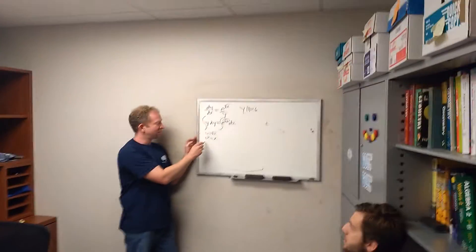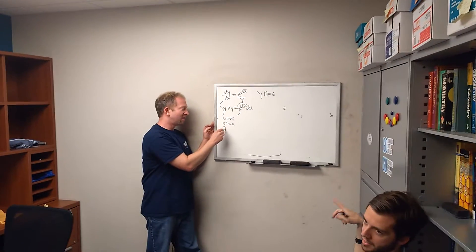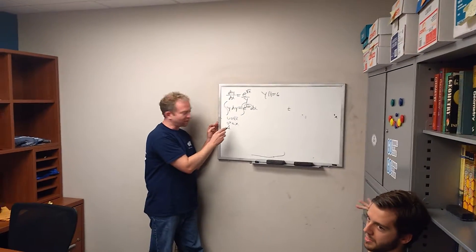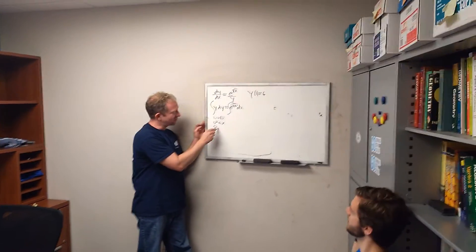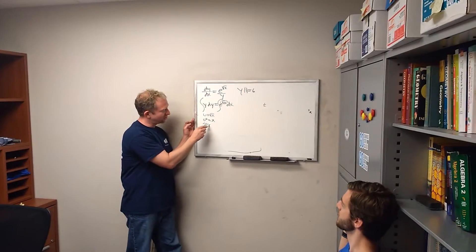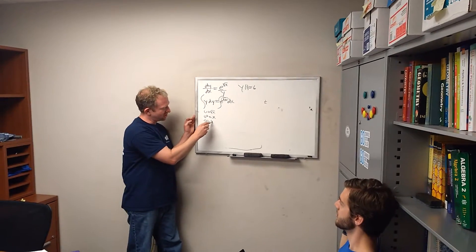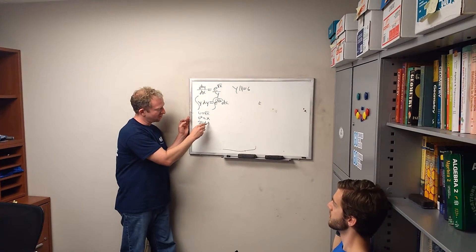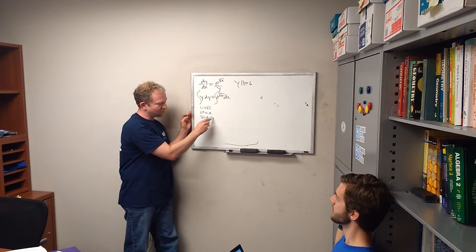Why do you do that? Well, watch this — because it gets rid of the radical. It gets rid of the radical. And then you get 2U du equals... okay, I see that.